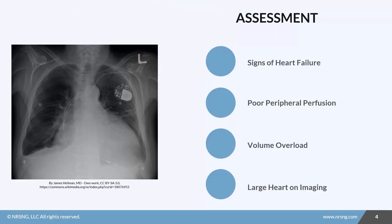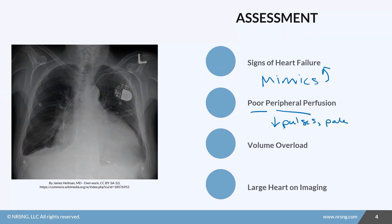When we assess a patient with cardiomyopathy, we're going to see those signs of heart failure — it almost mimics heart failure. You'll see poor peripheral perfusion, such as decreased pulses, and the patient may be pale. It can also lead to volume overload because of fluid backing up, so you'll see JVD where the jugular vein pops out of the neck, or pulmonary edema with shortness of breath, pink frothy sputum, cough, and crackles in the lungs.